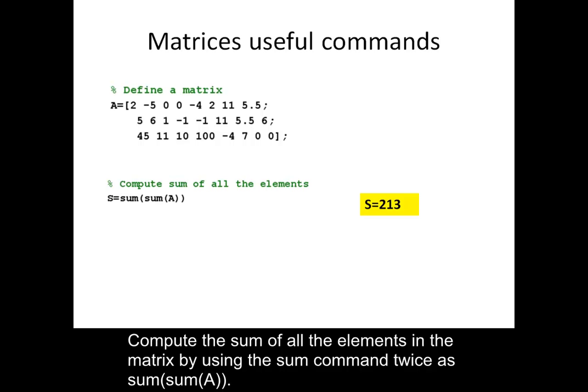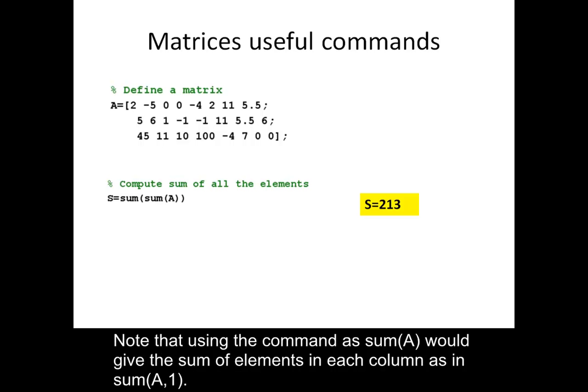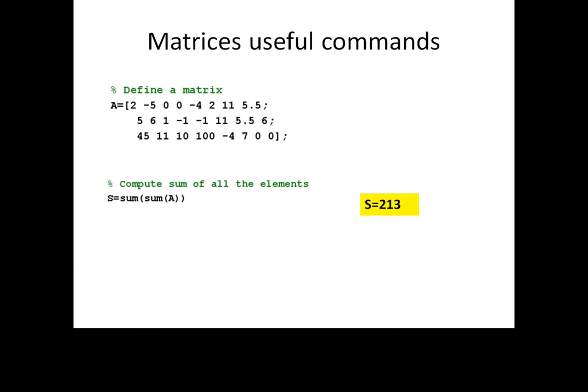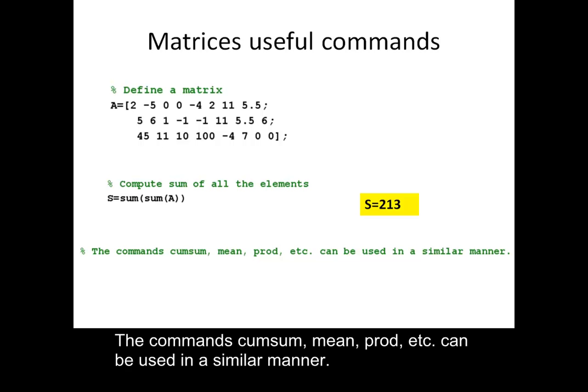Compute the sum of all the elements in the matrix by using the sum command twice as sum(sum(A)). Note that using the command as sum(A) would give the sum of elements in each column, same as sum(A,1). The commands mean, prod, etc. can be used in a similar manner.